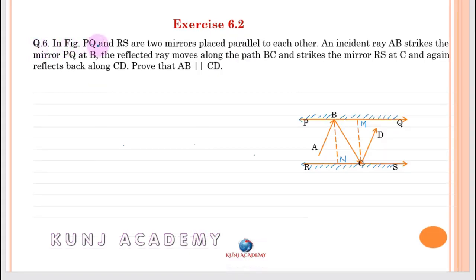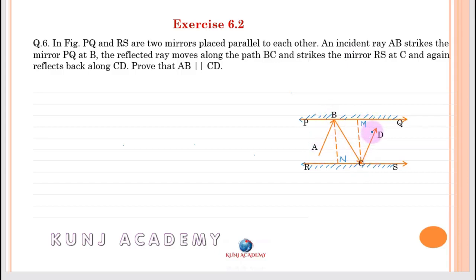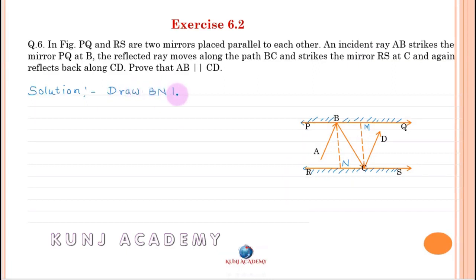Question: In the figure, PQ and RS are two mirrors placed parallel to each other. Prove that AB is parallel to CD. Solution: Draw BN perpendicular to PQ and CM perpendicular to RS.